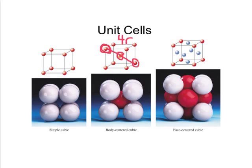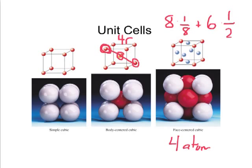Now let's look at the face-centered cubic unit cell. How many atoms are in it? Once again, I have eight corner atoms each contributing one-eighth of themselves. Plus, I have a new type of location: atoms on the center of each face. I have six faces, so six facial atoms each contributing one-half of themselves. That gives a total of four atoms per unit cell in the face-centered cubic.